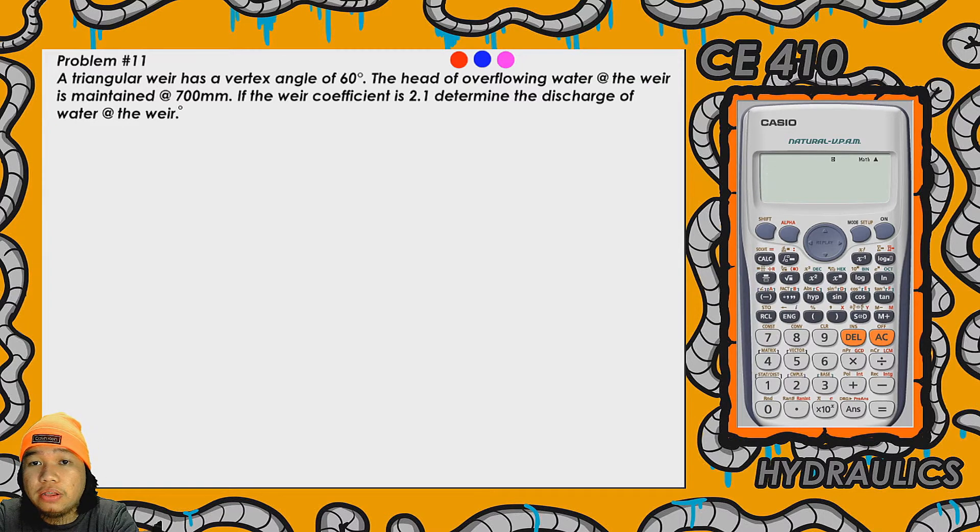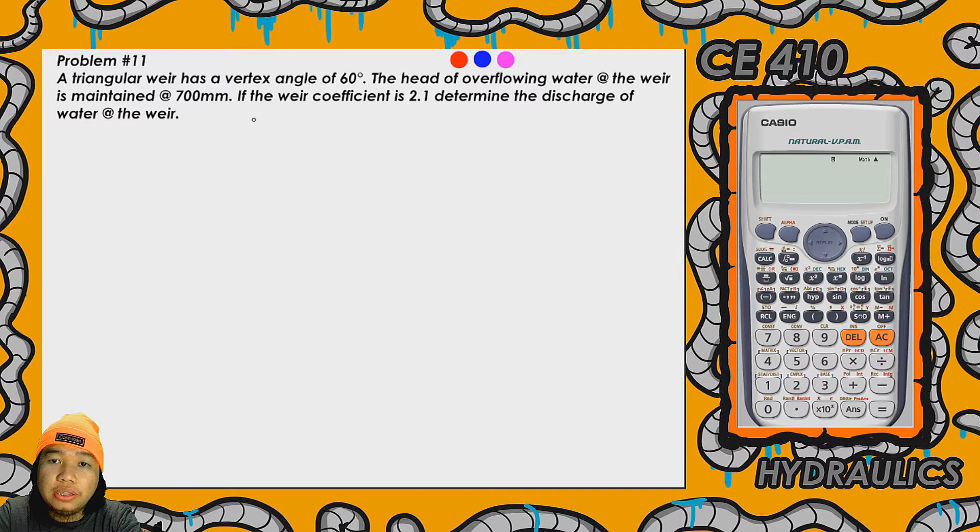Problem number 11: A triangular weir has a vertex angle of 60 degrees. The head of overflowing water at the weir is maintained at 700 millimeters. If the weir coefficient is 2.1, determine the discharge of water at the weir.